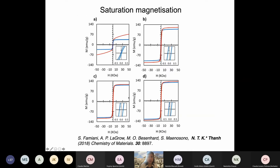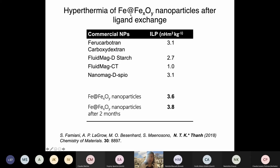With this kind of particle we get a very high saturation magnetization - up to nearly 135 EMU per gram. We then tested these for magnetic hyperthermia for cancer treatment using the ILP, the intrinsic loss parameter. Comparing with different commercially available nanoparticles, our nanoparticles show higher ILP. And interestingly, they are very stable - the iron oxide coating keeps them stable for up to two months.